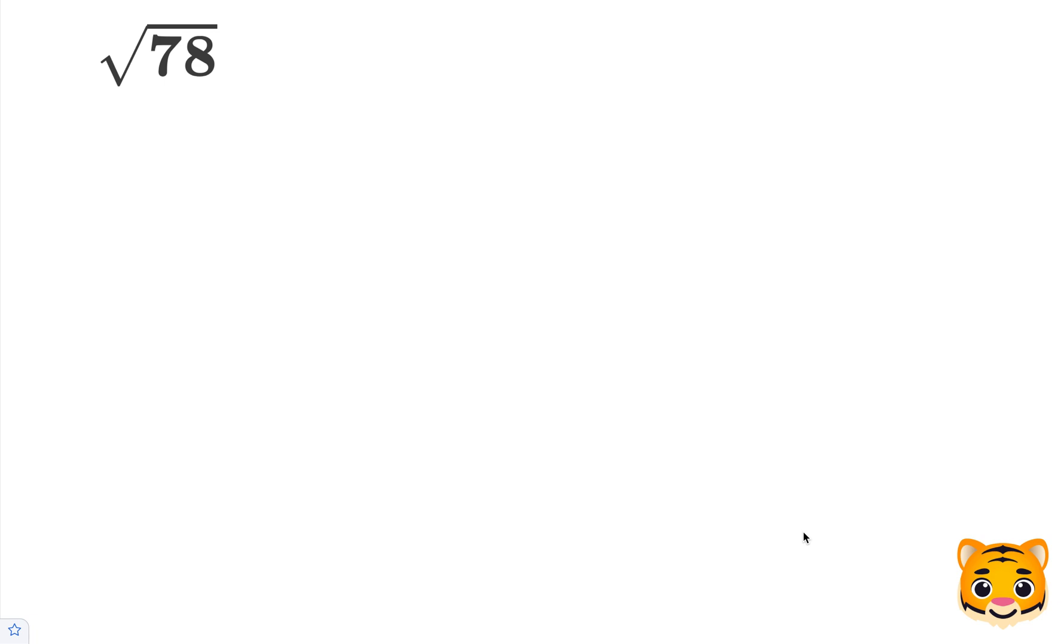In this example, we will be evaluating the square root of 78 to the nearest tenths place value. To do this, we want to look at perfect squares nearby to 78.